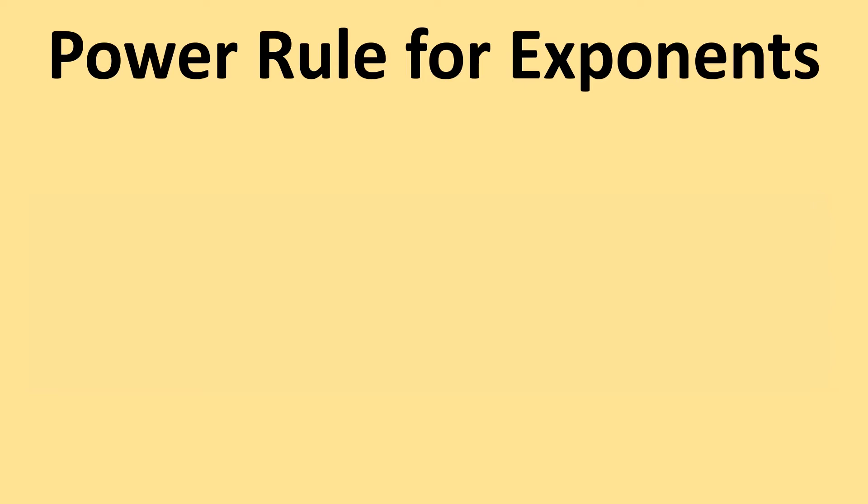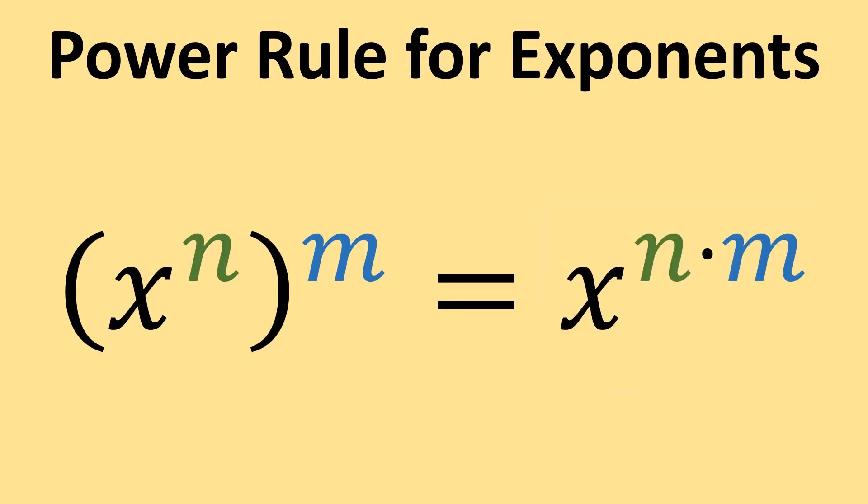Hey, this is Joe, and today let's talk about the power rule for exponents. That is, if I have a variable raised to a power which is then raised to another power, that's going to be equal to the variable raised to the product of the two powers.